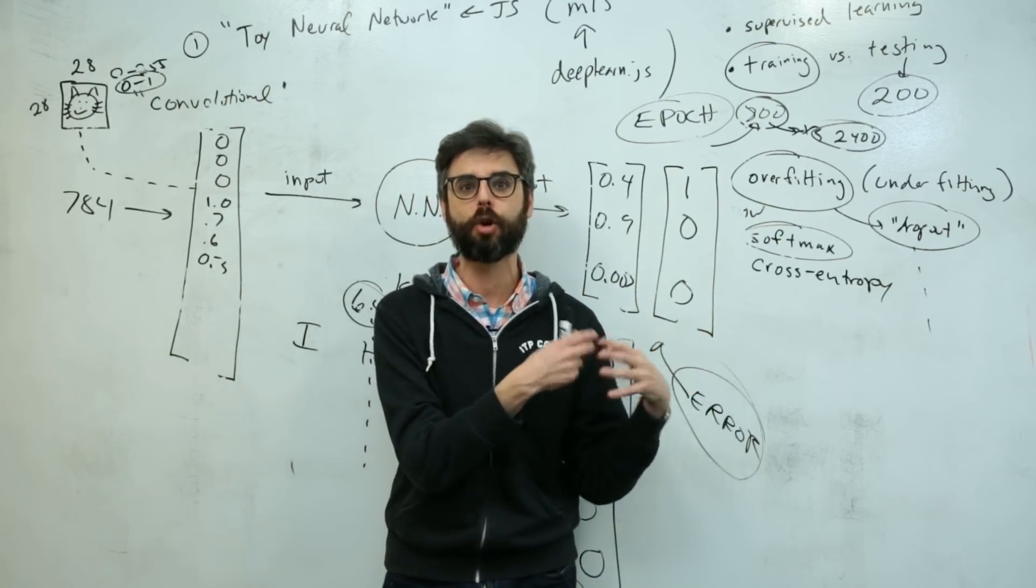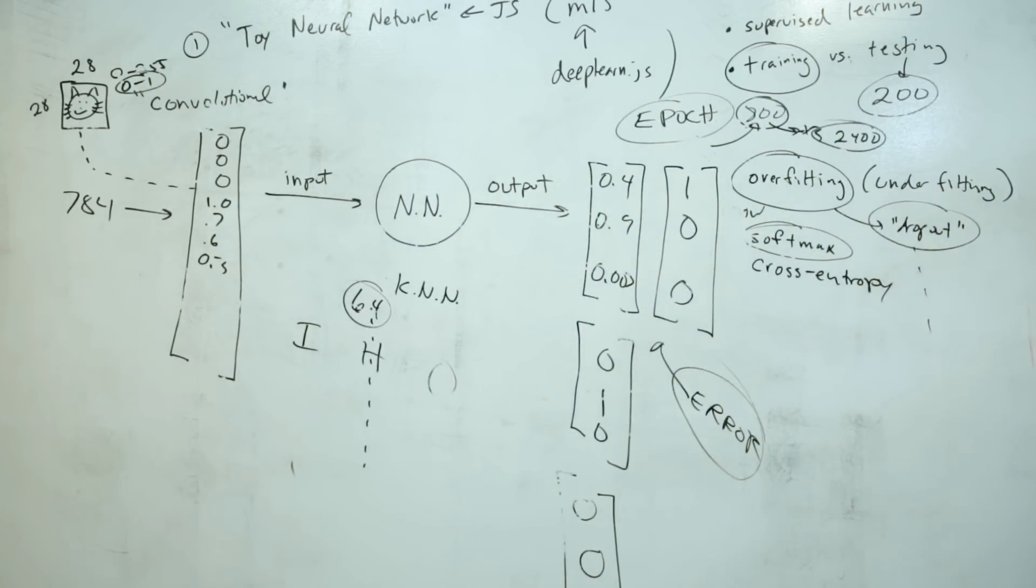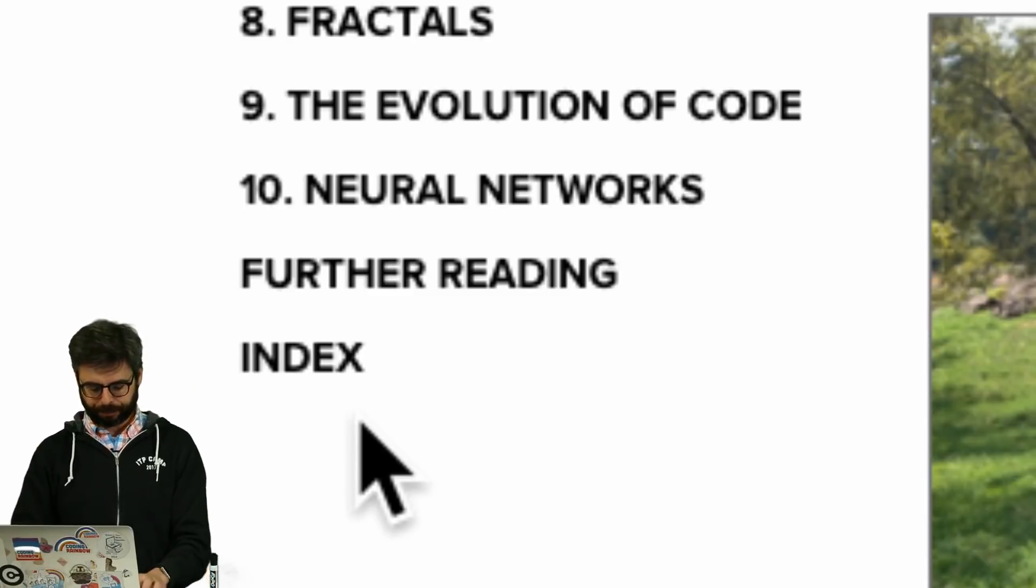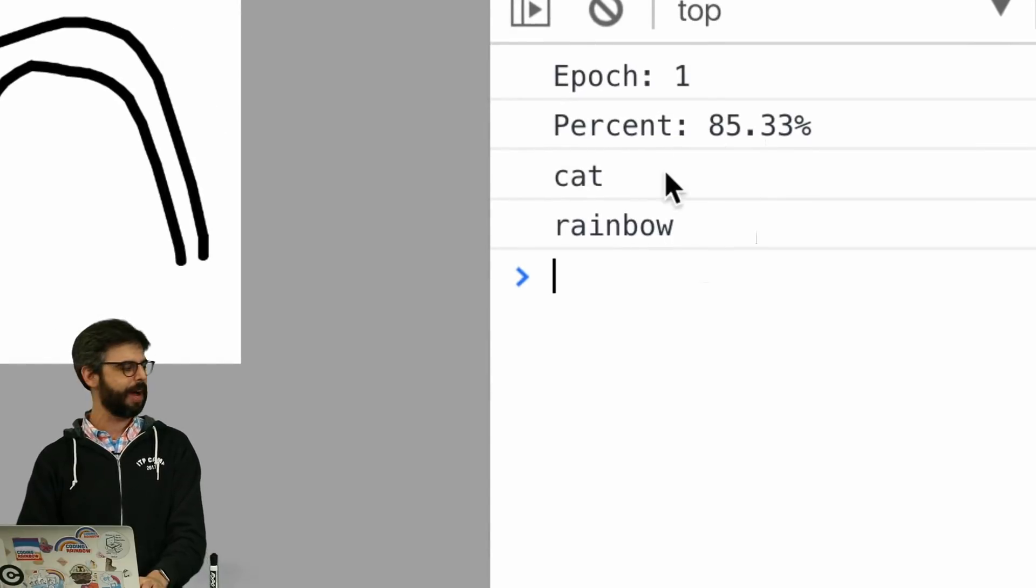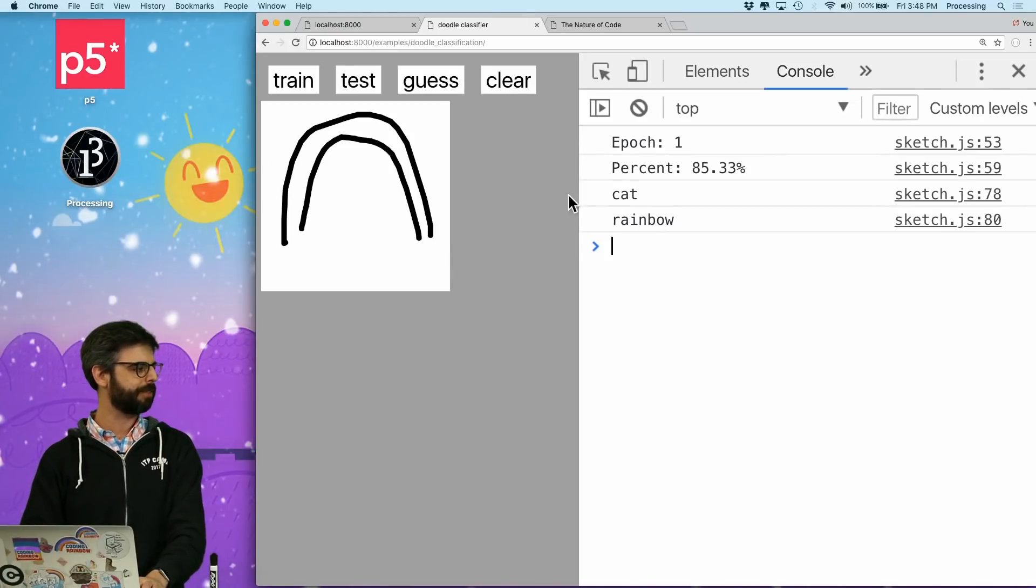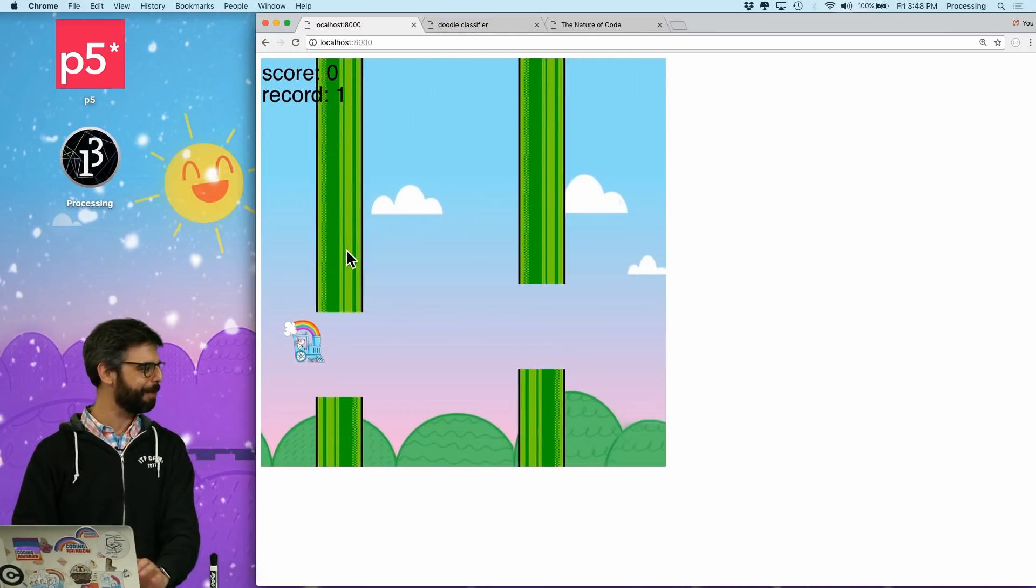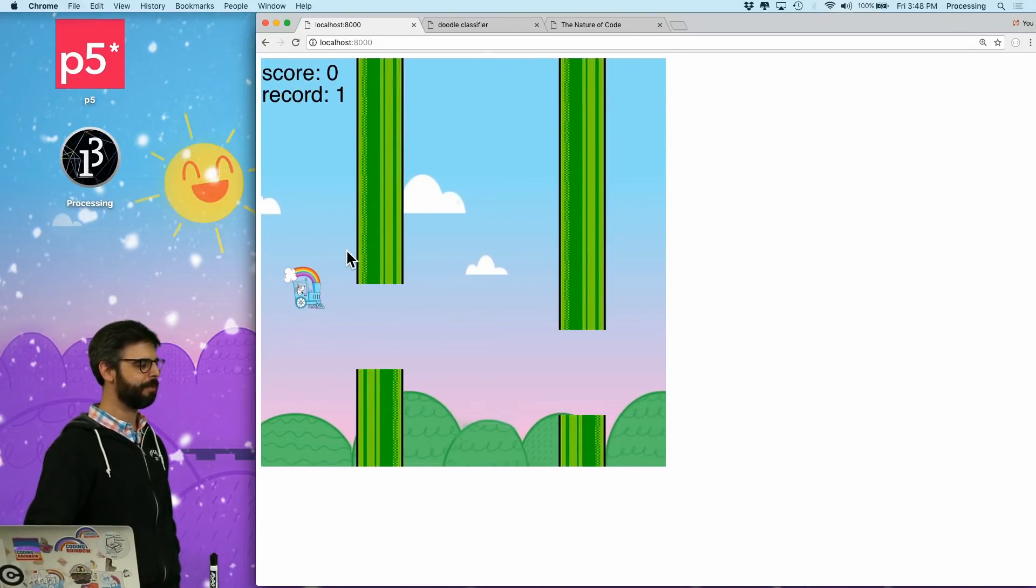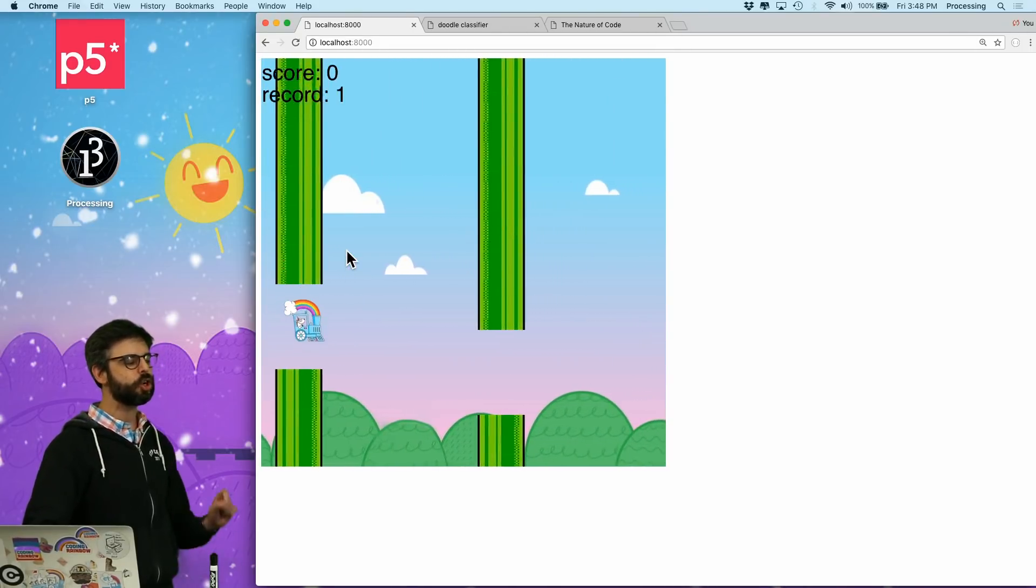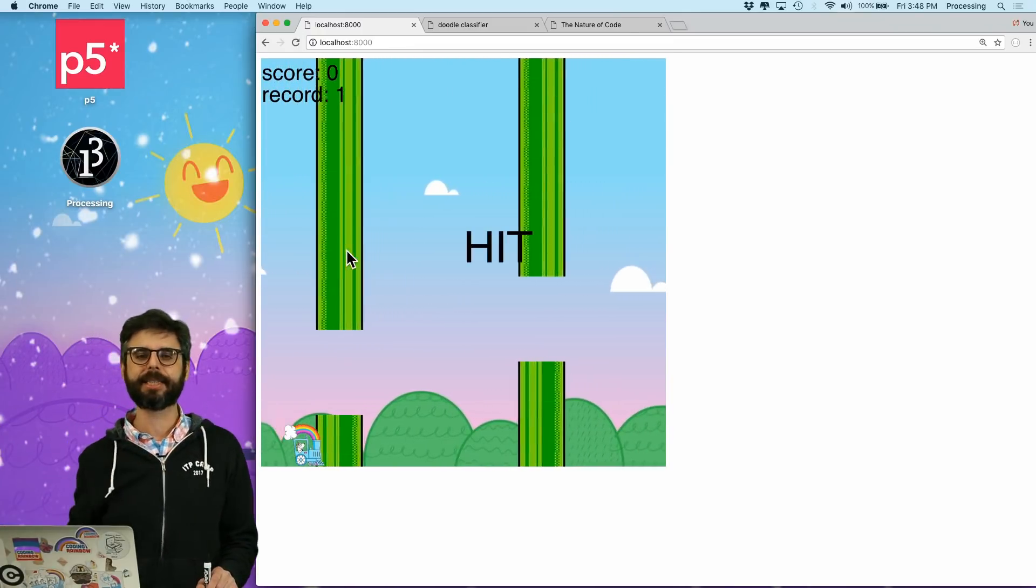Through that diagram I will discover things I need to add to my neural network codebase. At some point, if all goes according to plan, I have this doodle classifier example which you see here classifying my rainbow, but what I want to do is take this version of the game flappy coding train and see if I can use a neural network that evolves to play this game.